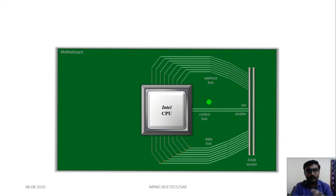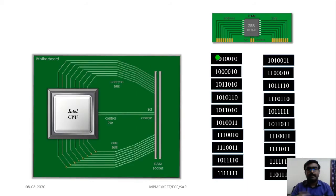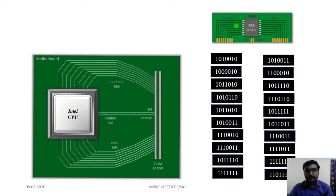Here we are considering only the RAM and the processor. This is an 8-bit processor, so it has 8 address bus lines and 8 data bus lines. We are considering a 256-byte RAM which has 8-bit address lines and 8-bit data lines. A chip enable signal is directly connected to the processor, and each location in the RAM has a unique address.